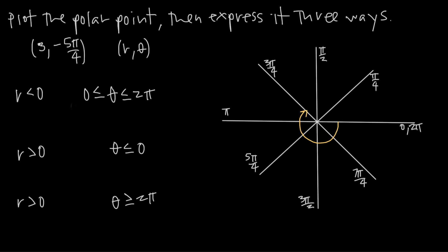Then r = 3 tells us that we're going out from the origin a distance of 3 units — right about here, 3 units away from the origin. So that point there is (3, negative 5 pi over 4).